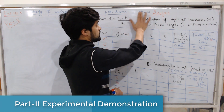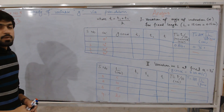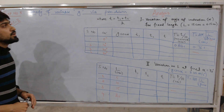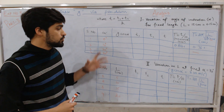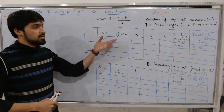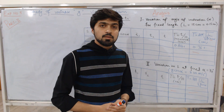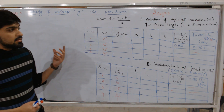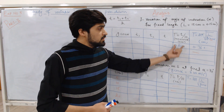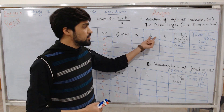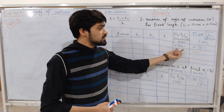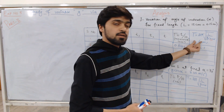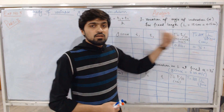We have discussed the theory and calculations of experiment number 5 in part 1. Before proceeding to the workstation, we will experimentally demonstrate what a variable g pendulum is, how to derive the relations, and how to get the time period. In the previous lecture, I mentioned that I have added some extra columns in this table: T1, T2, and T. T1 is the time measured using the stopwatch, and T is the time period calculated via the time period relation for the variable g pendulum case.